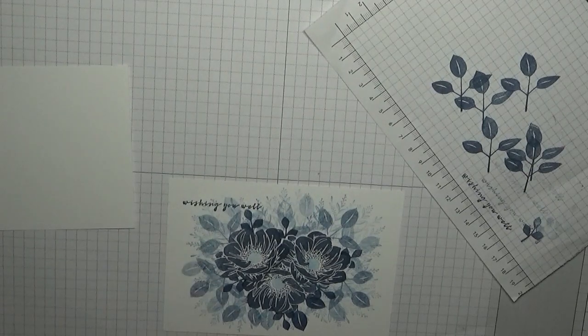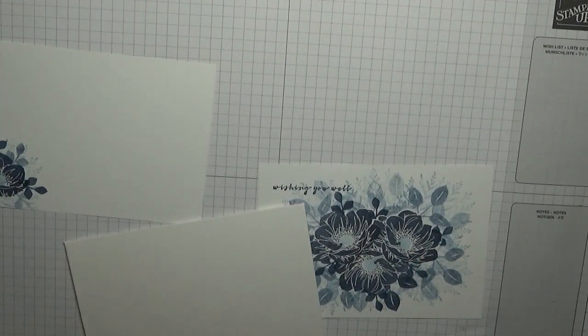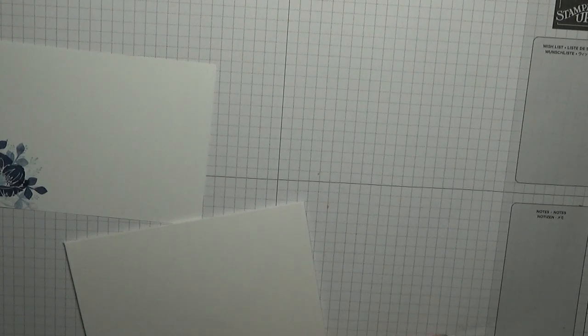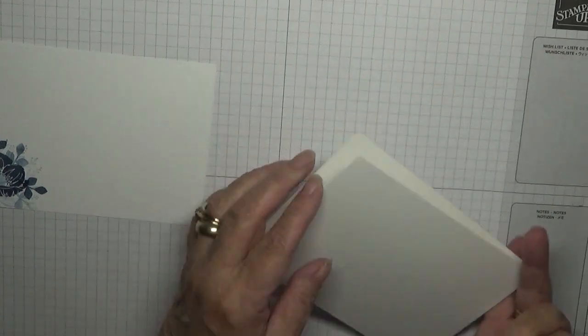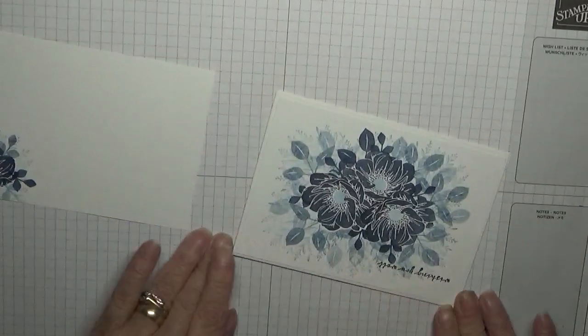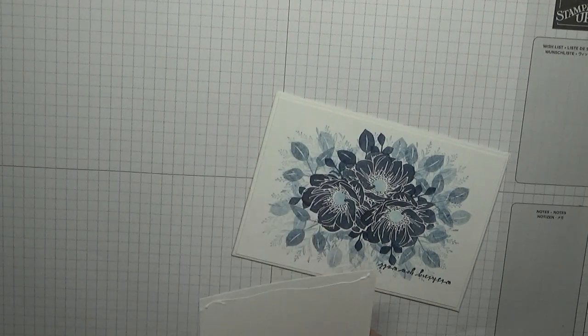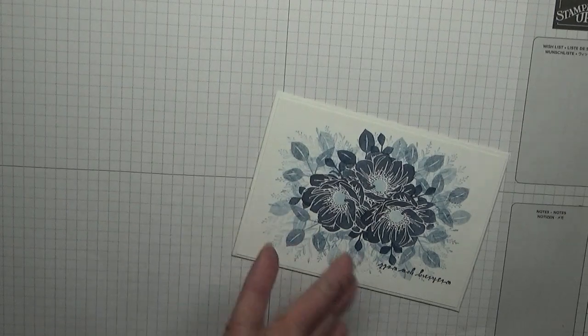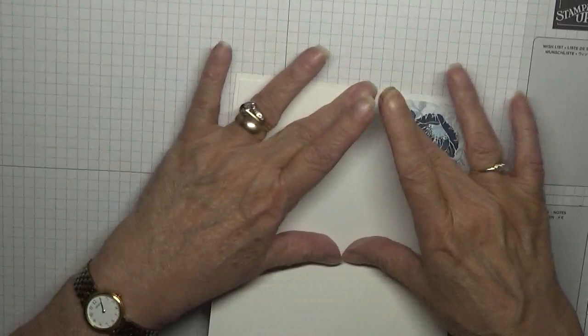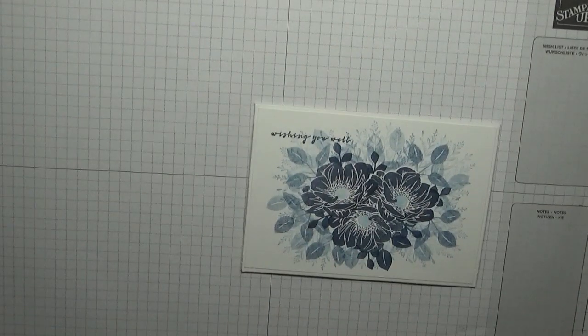So all we've got to do is close that, get rid of that, bring in our card base and our glue and place it evenly down.